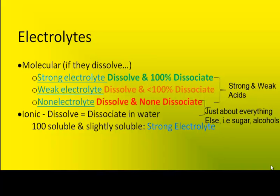In this video, I'd like to explain what an electrolyte is and help you determine if a compound is an electrolyte. An electrolyte is a compound that forms into a cation and an anion. Therefore, electrolytes must be some kind of ion.